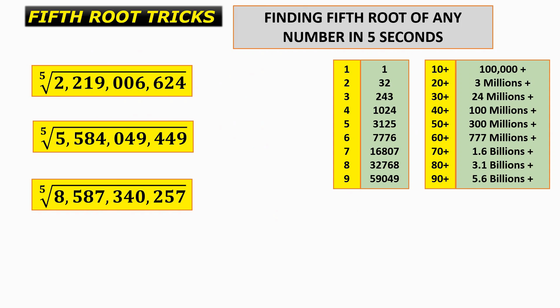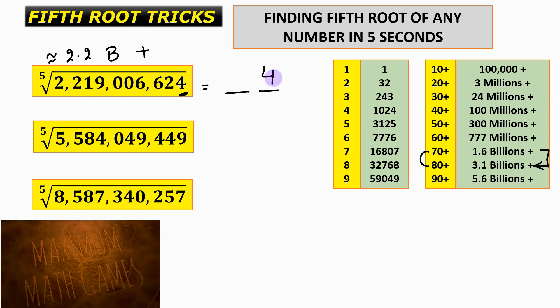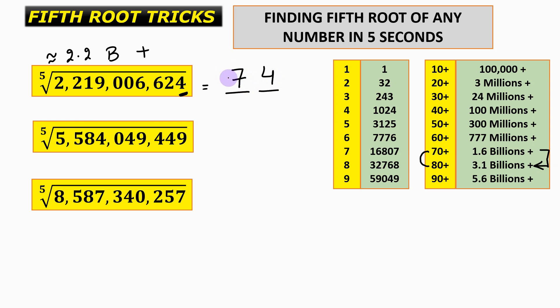Now let's look at the last three questions. If you want to try them yourself, pause the video now. The unit place of the first number is 4. This number is approximately 2.2 billion, which lies between 1.6 billion and 3.1 billion, so the number lies between 70 and 80. The tens digit is 7, giving us a fifth root of 74.